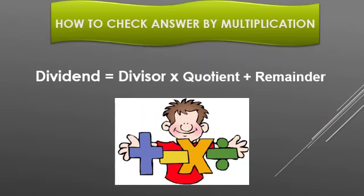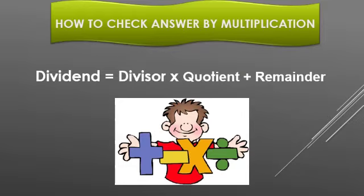Now, after division, how will you check whether your answer is correct or not? This is the method to check your answer: if the dividend equals the divisor multiplied with the quotient, and whatever product you get is then added with the remainder, and the result equals the dividend, it means your sum is correct.